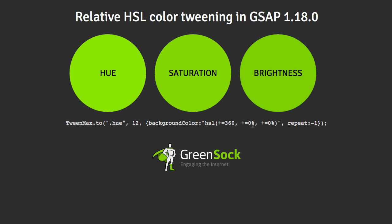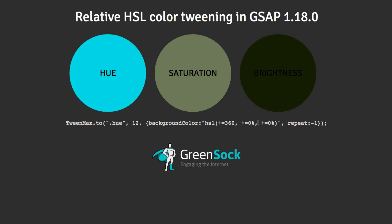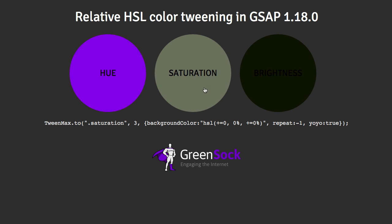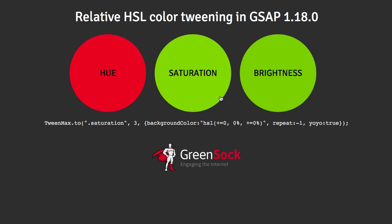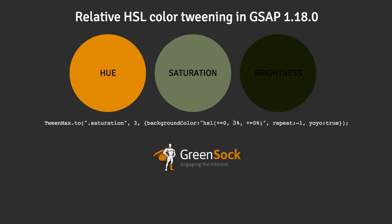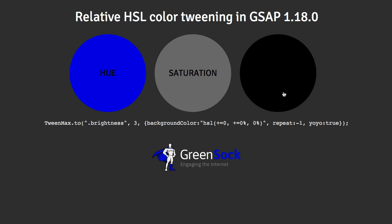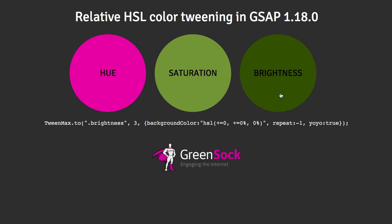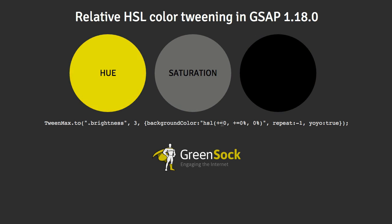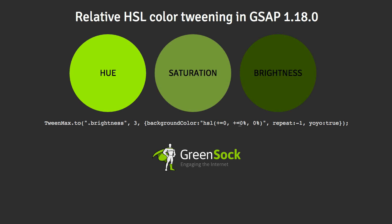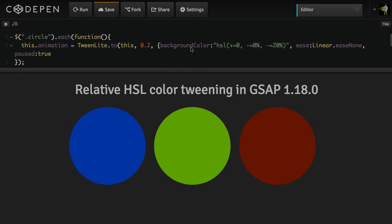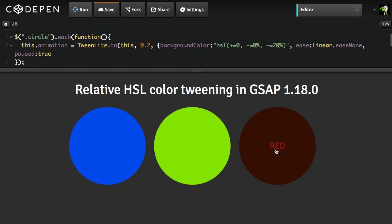Plus equals 0% on saturation and lightness just means those values will not change during this tween. For saturation, you're going to have something similar — we're bringing the saturation level down to an absolute value of 0%, and we're not touching the hue or the lightness. And for brightness, it's going to be exactly the same syntax, where the brightness is going down to 0 and we're doing no change on the hue or saturation. That's really all you need to know, but I'm going to walk you through a demo that shows you how to build this stuff from the ground up.